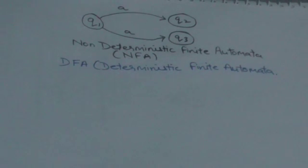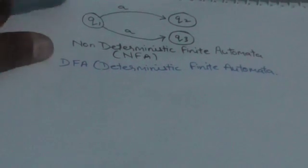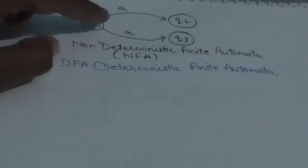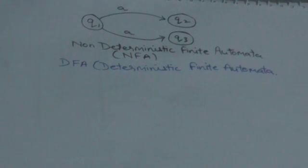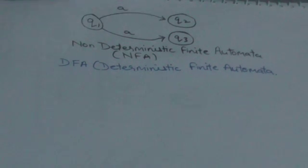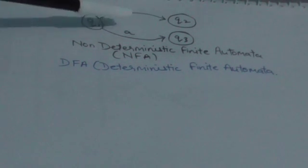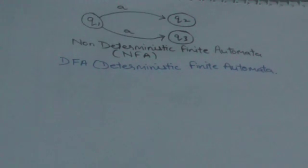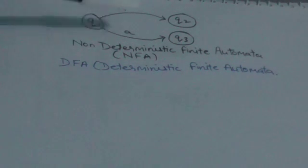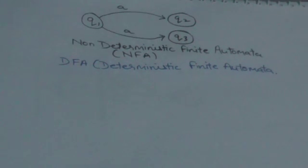Welcome back to this tutorial on automata. Look at this transition — if we apply input symbol A on state q1, there are two transitions: the machine can jump to state q2 or jump to state q3. Does it mean the machine jumps to both states? No, it means the machine has a choice.